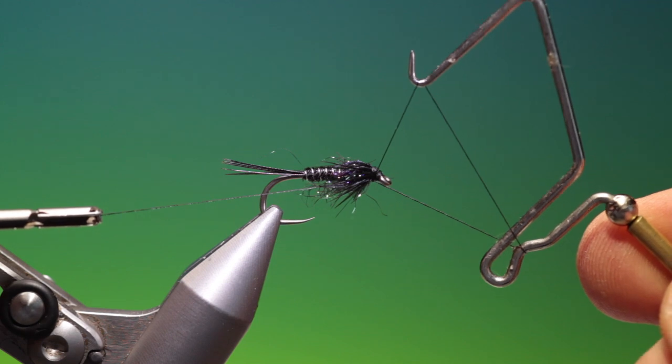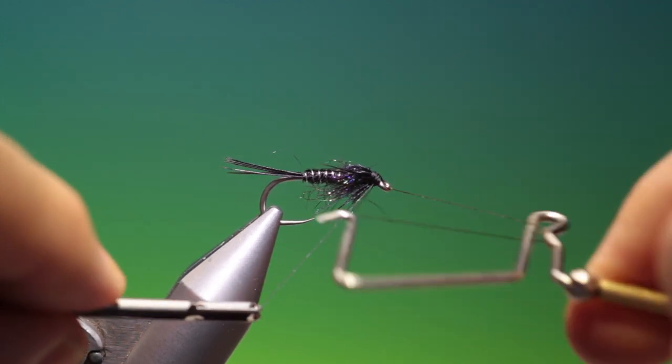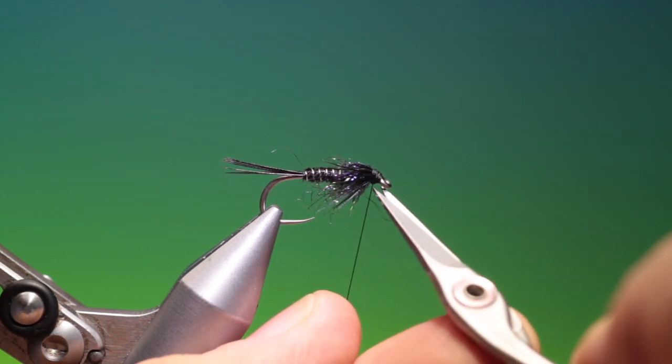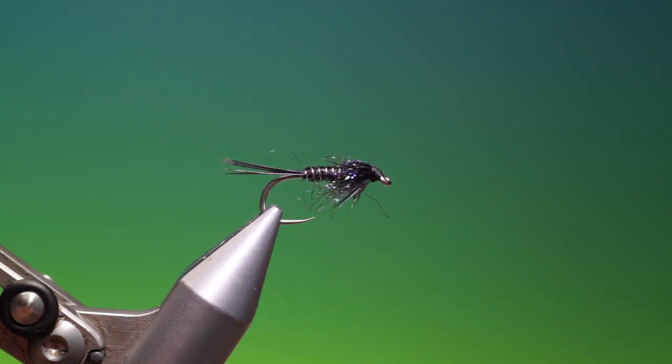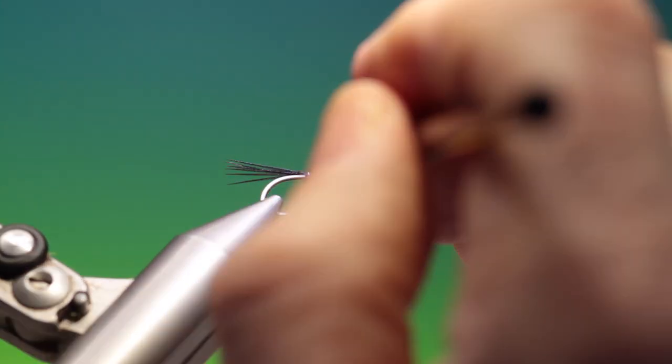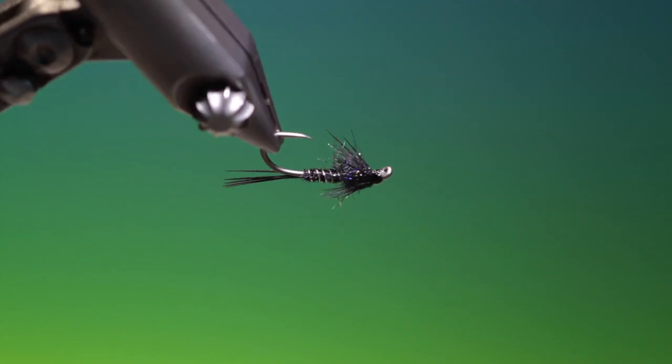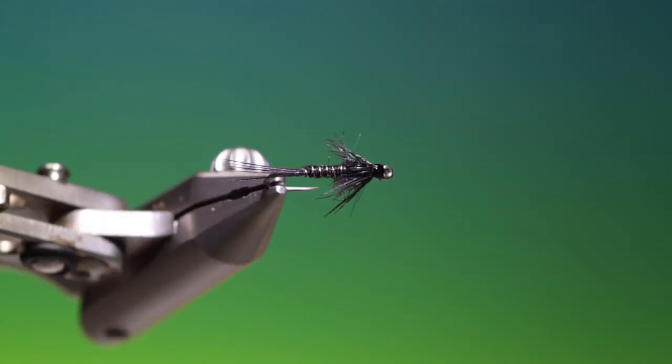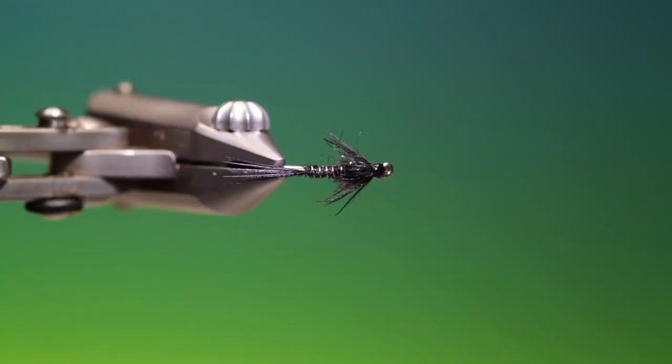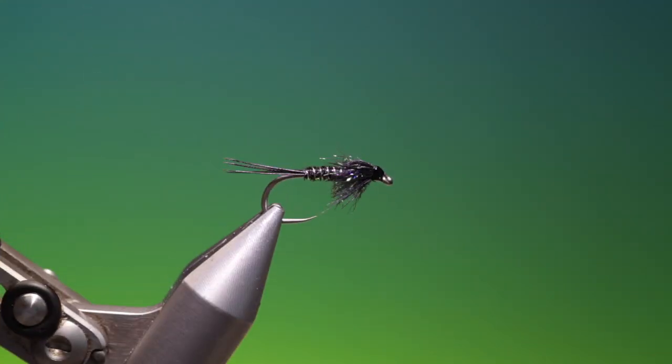Give it one more. Remove the tying thread. Varnish the head. And that's the finished pheasant tail black. If you enjoy the videos, please like, share, subscribe. And thanks for watching.